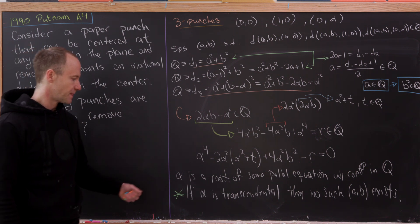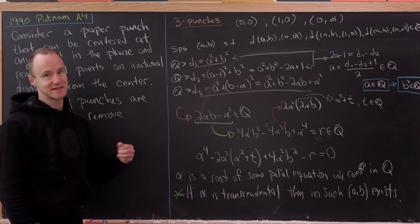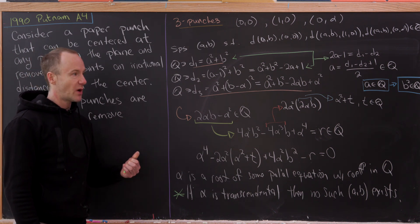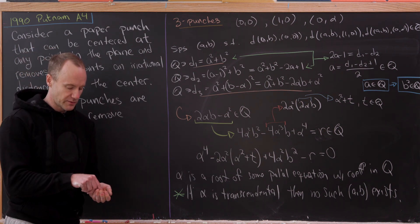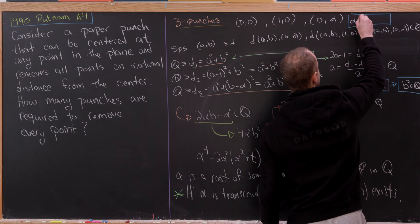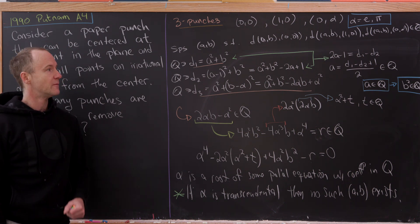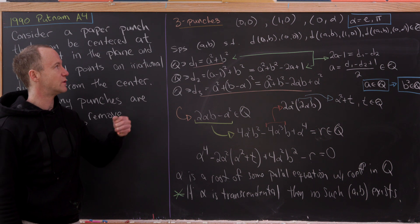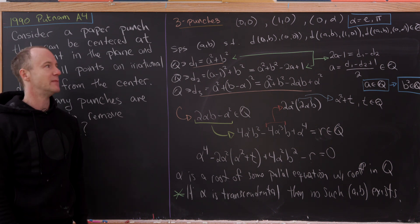To step back: if we pick three points — (0, 0), (1, 0), and (0, α) where α is transcendental, say α = e or α = π — then there exist no points in the plane simultaneously at rational distance from all three. That means three punches clear every point in the plane. Combined with the fact that two punches are not enough, the minimal number of punches required is three.